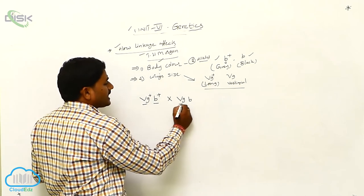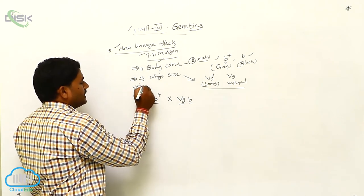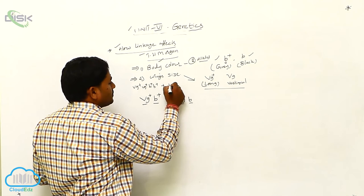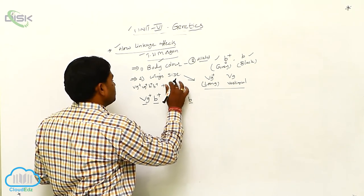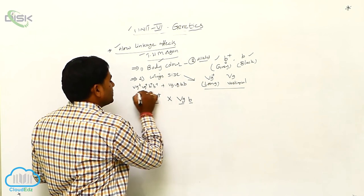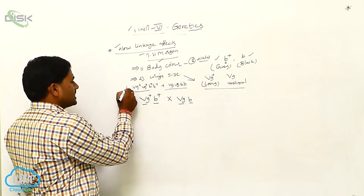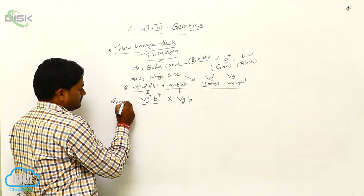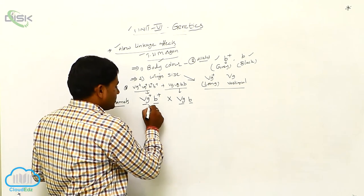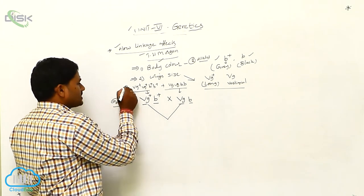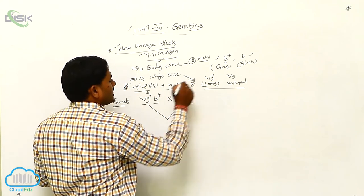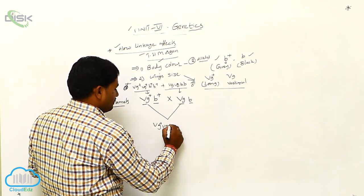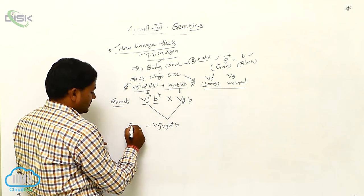The gametes produced by the parent generation are: long-winged gray parent produces VG+ B+ gametes, and the vestigial black parent produces VG B gametes. When crossing takes place — considering one as female and the other as male — the F1 generation offspring are VG+ VG, B+ B, meaning they are long-winged and gray colored.